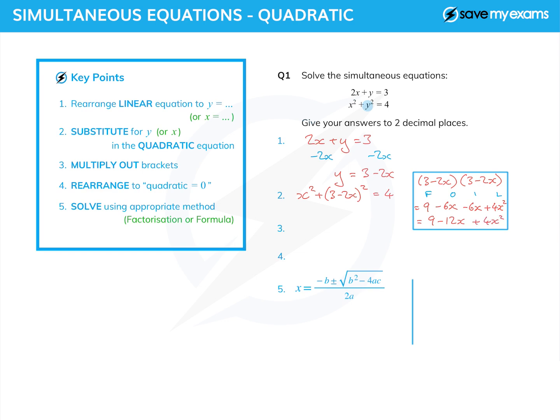I can now put this into the original equation here. So x squared, and then instead of the brackets, I've got nine minus 12x plus 4x squared equals four. So I've just replaced the square there with that expression I found in my blue box.